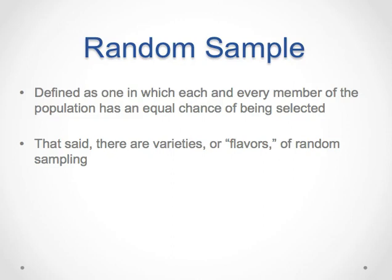Once a researcher determines sample size, they can obtain their sample from the population of interest. Random selection requires the use of some form of random sampling. Random sampling is a probability sampling method, meaning it relies on the laws of probability to select a sample that can be used to make inferences to the population. A random sample is one in which each and every member of the population has an equal chance of being selected.